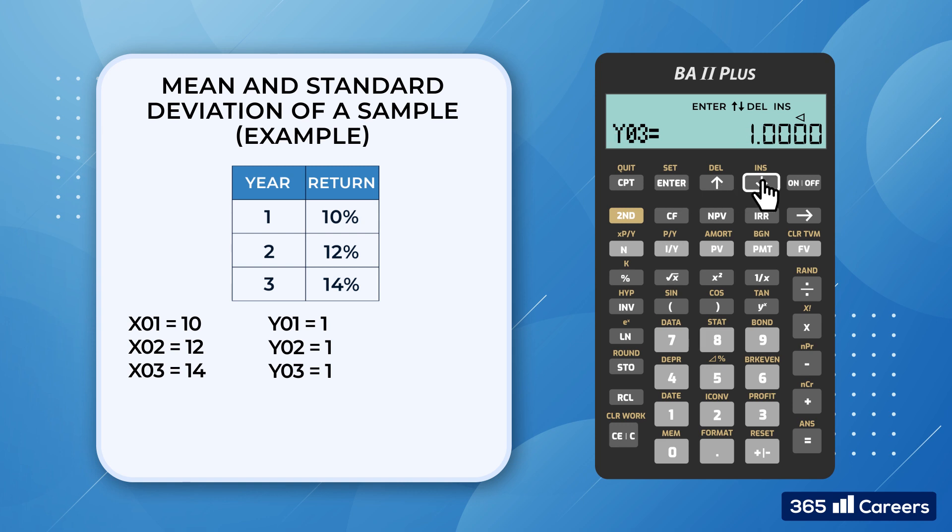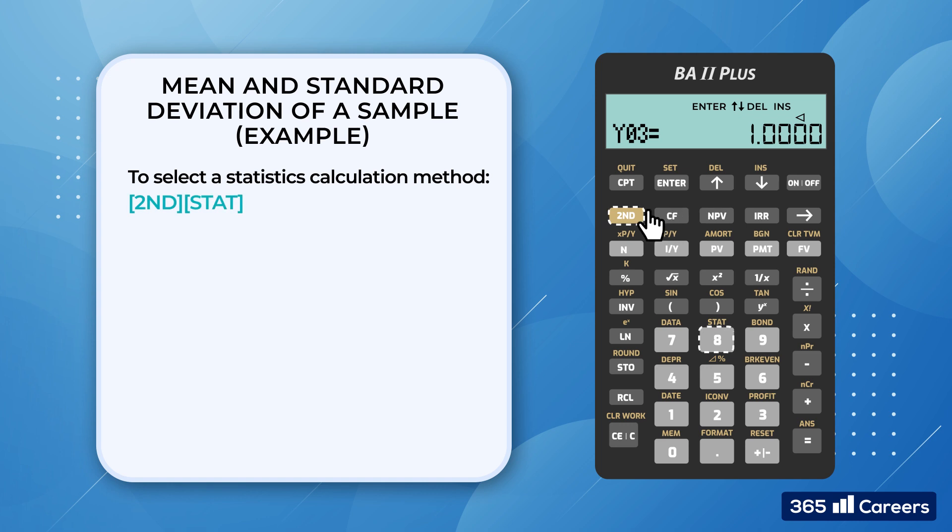Alright, now that we have our data stored in the calculator, we need to choose what type of analysis we would like to perform. To do that, we press 2nd STAT. The statistics worksheet performs analysis on 1 and 2 variable data with 4 regression models. To toggle between them, we press 2nd SET. Let's discuss each of these models in more detail.